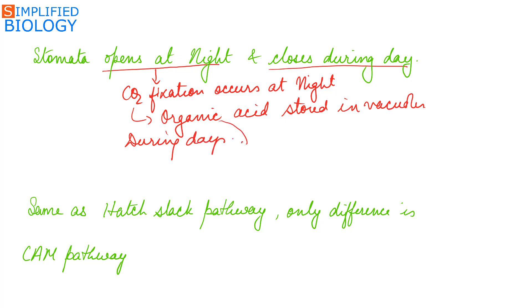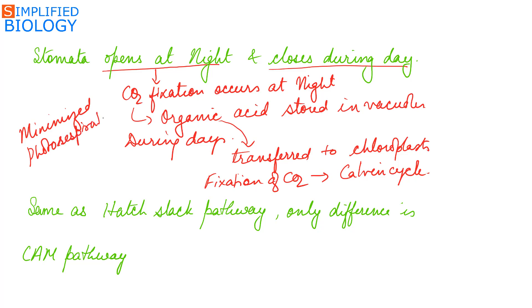During day, the organic acids are released from the vacuoles, transferred to chloroplast where carbon dioxide is released and fixation occurs by Calvin cycle. They have minimized photorespiration and saved water, as stomata opens at night so loss of water due to transpiration is minimized.